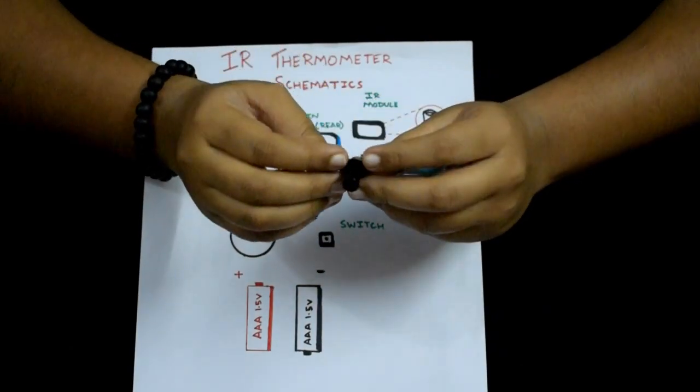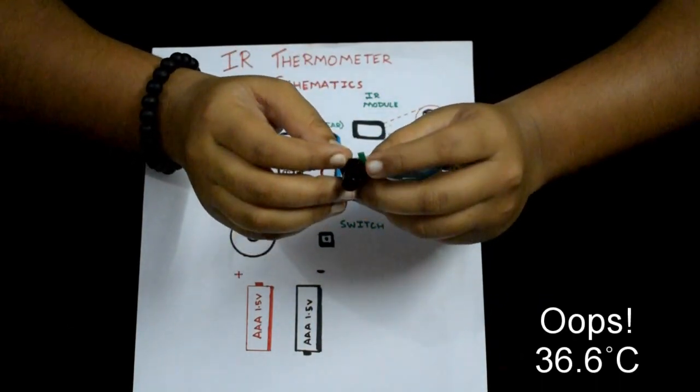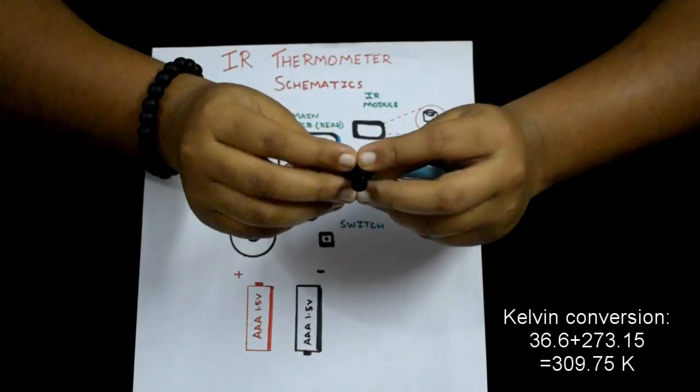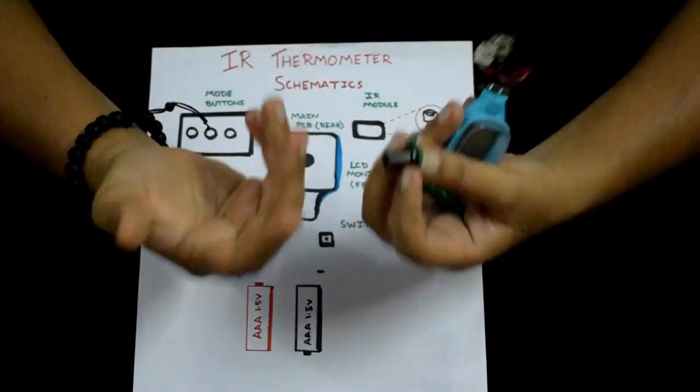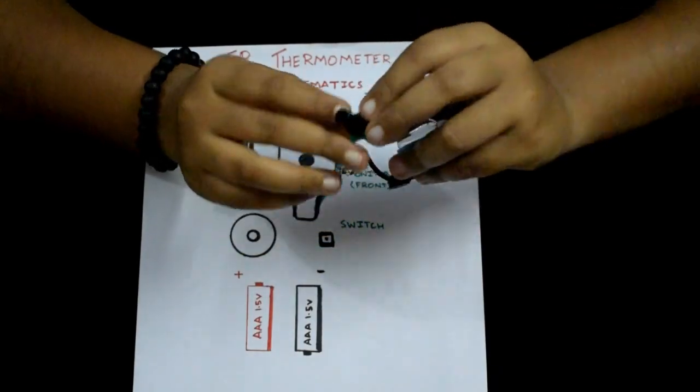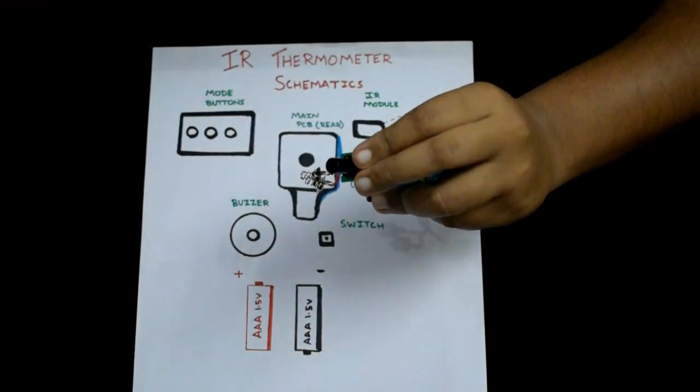So before starting the video, I checked my temperature and it was 36.4 degrees Celsius. Converting it to Kelvin, it would give me around 309.5 Kelvin. So obviously I'm emitting radiation, and the thermal radiation is being absorbed by the IR from this module. IR radiation only acts as a carrier, taking my thermal radiation and focusing it into the thermistor inside this.